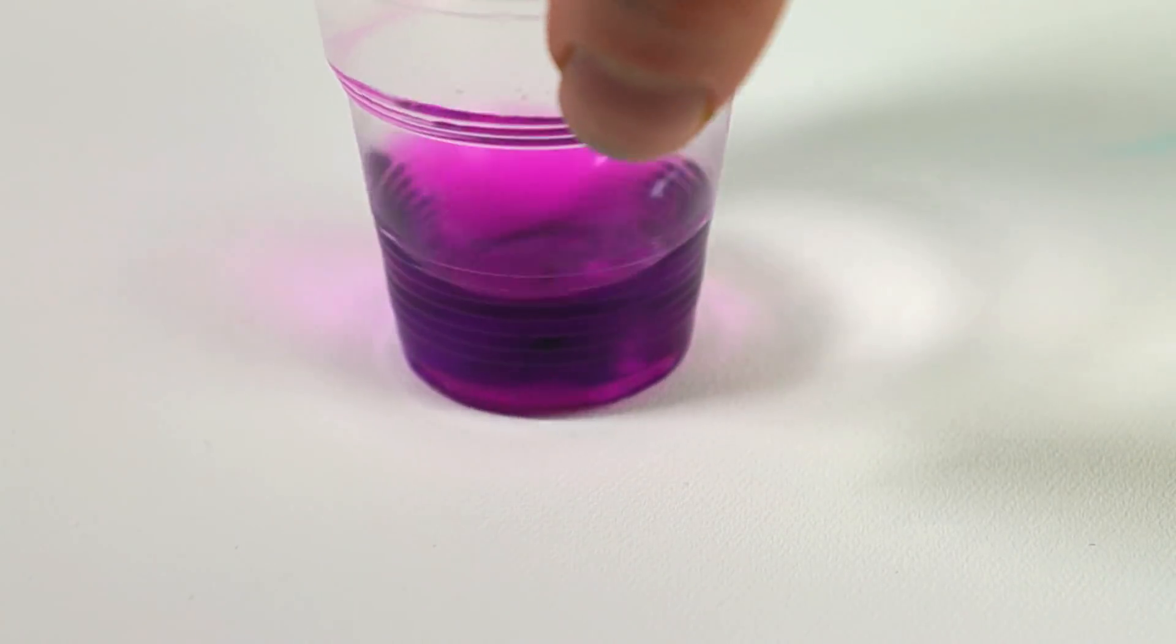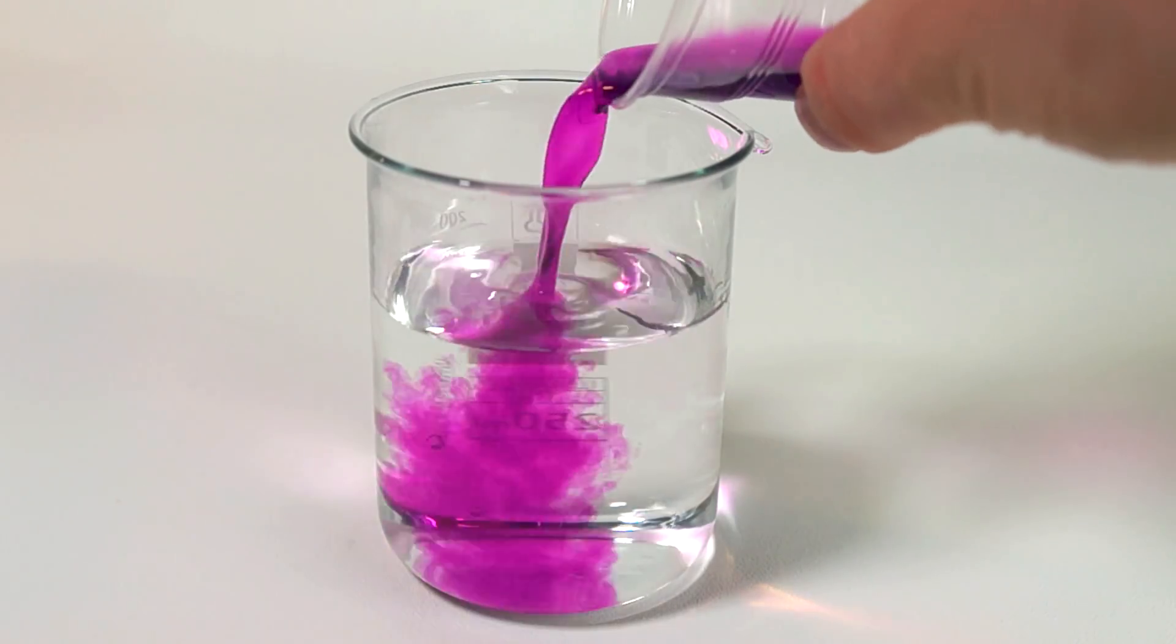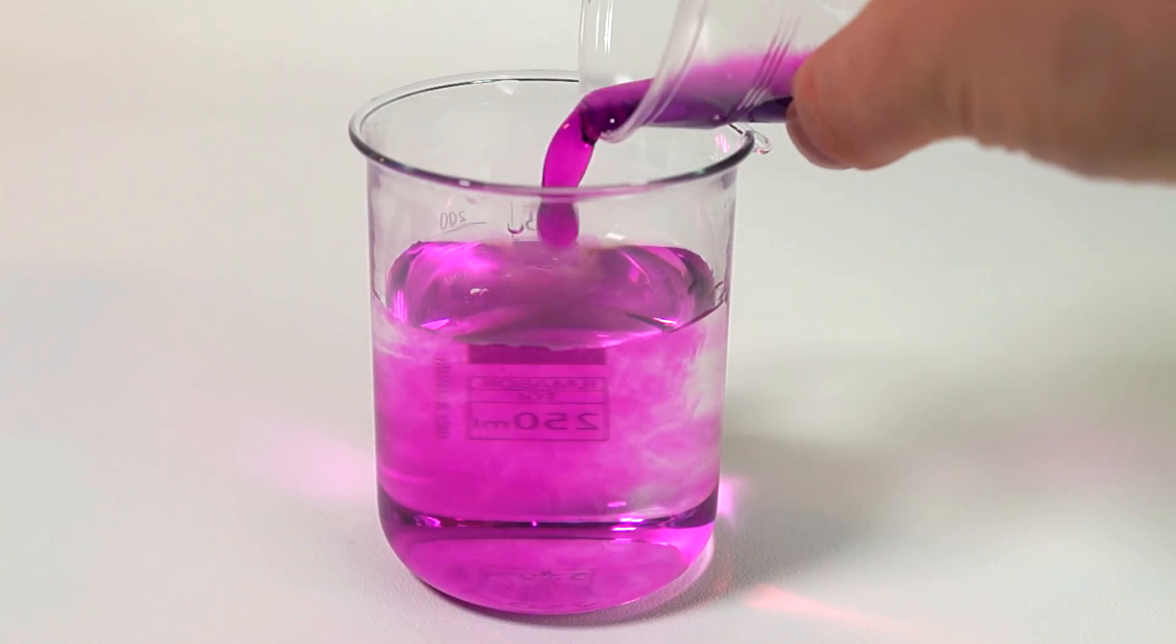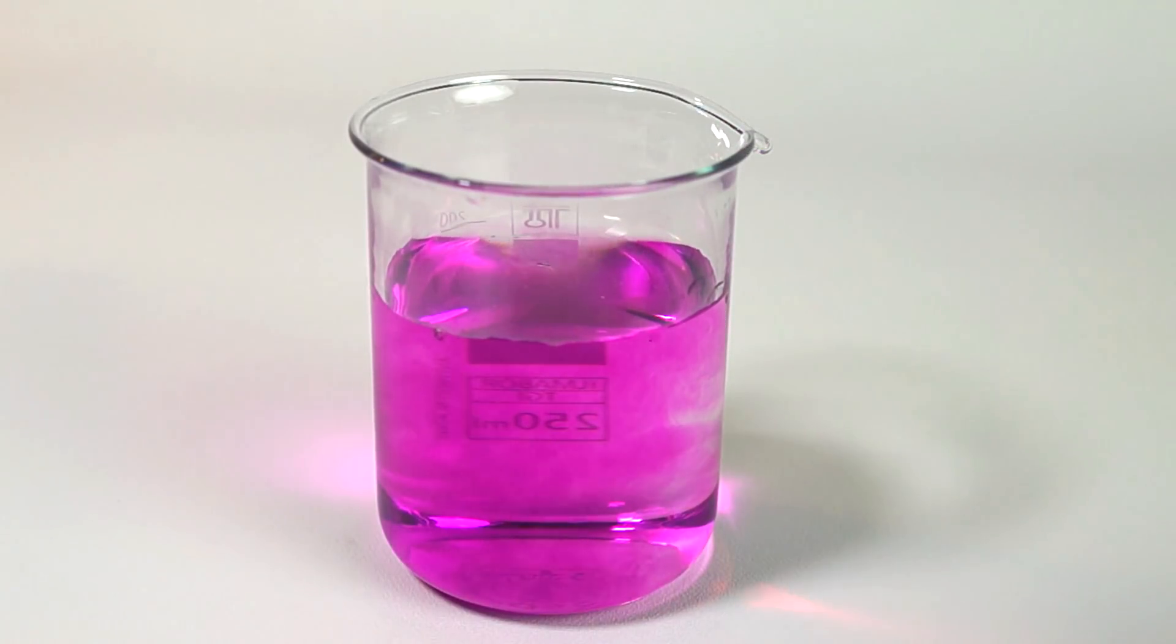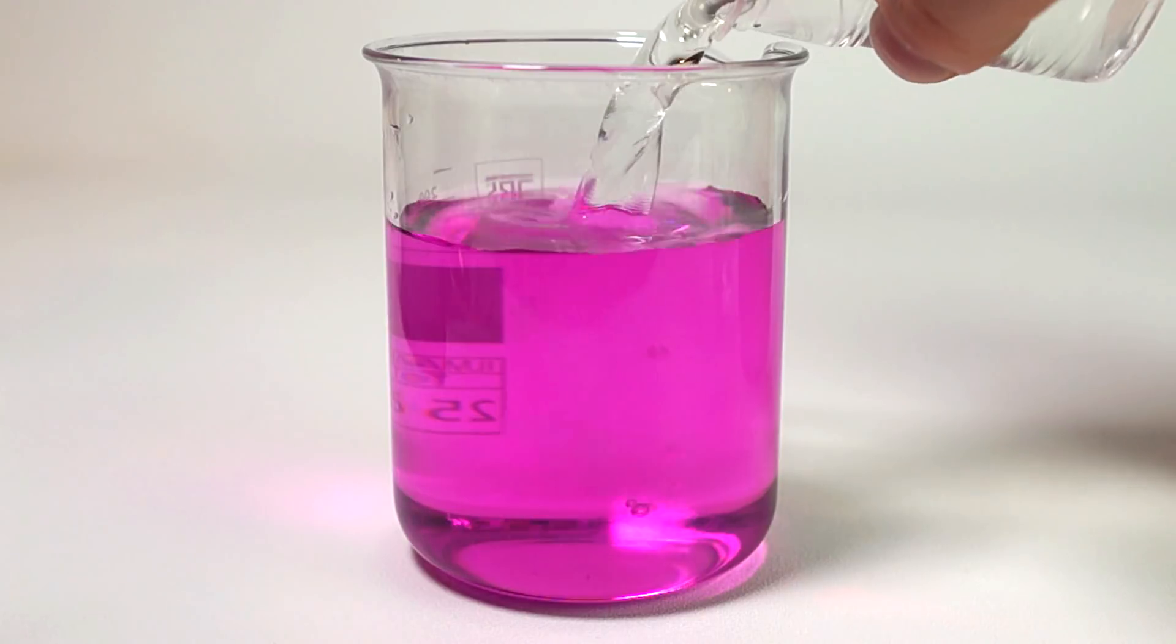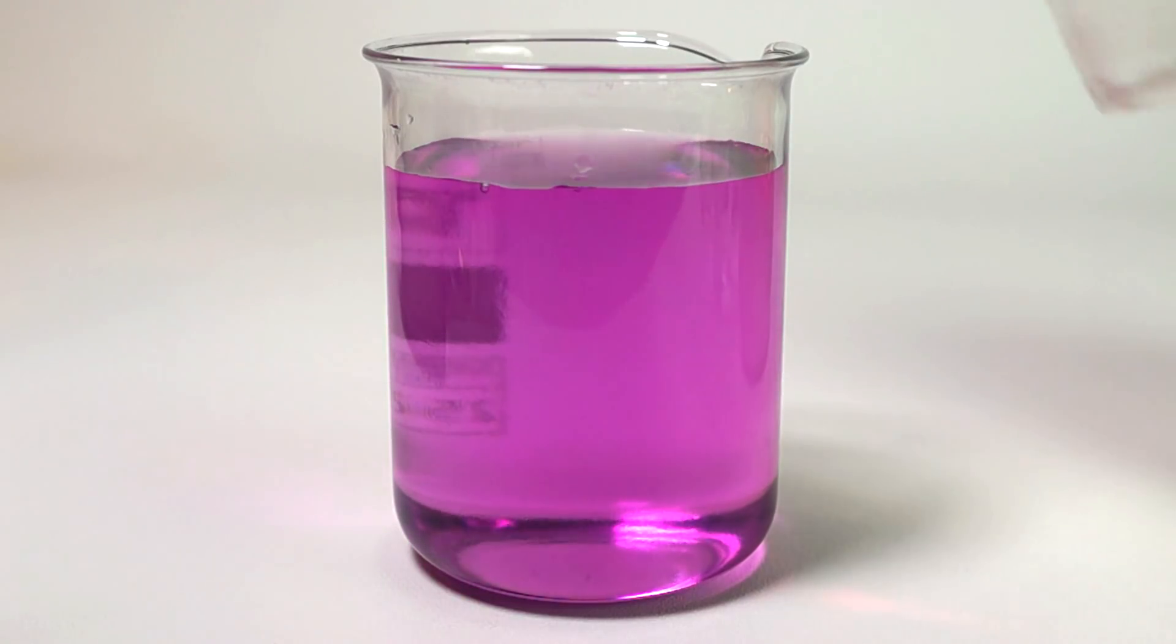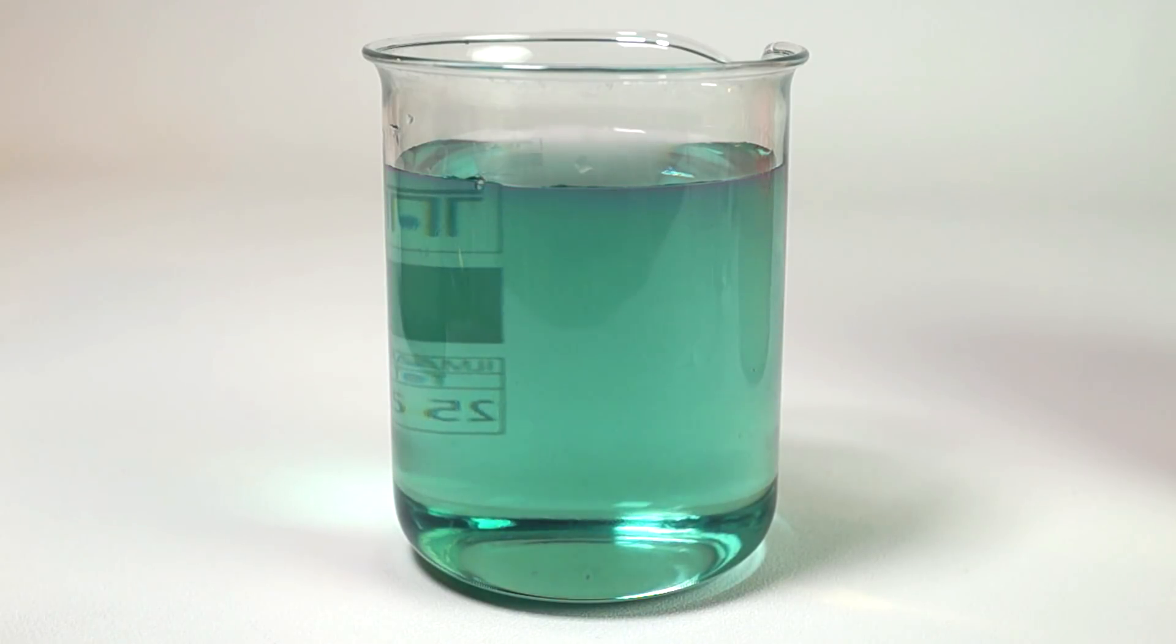With this compound you can conduct an interesting experiment called the chemical traffic light. To do this, we'll make a weak solution of potassium permanganate, and then we'll add an alkaline sugar solution to it. In the alkaline environment, potassium permanganate oxidizes the sugar, thus reducing itself first to the green potassium manganate and then to the yellow manganese dioxide.